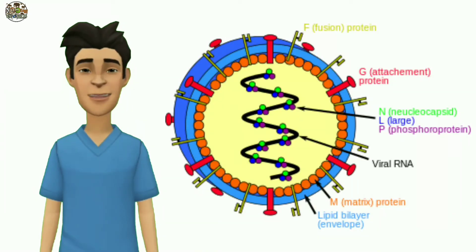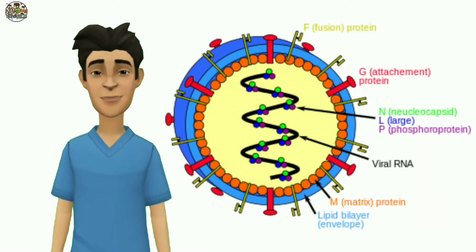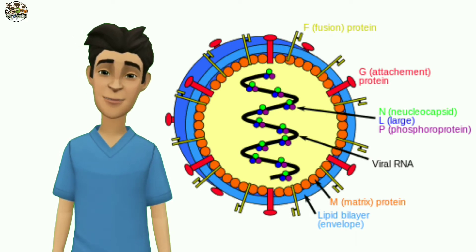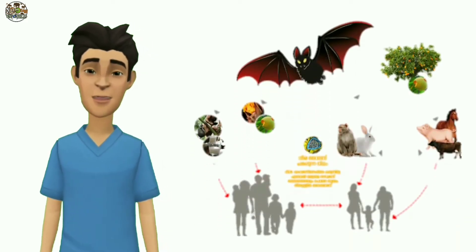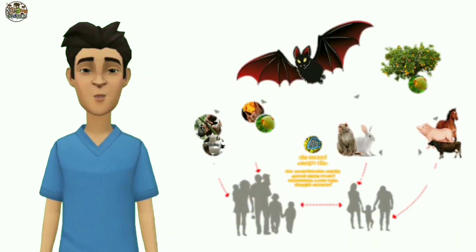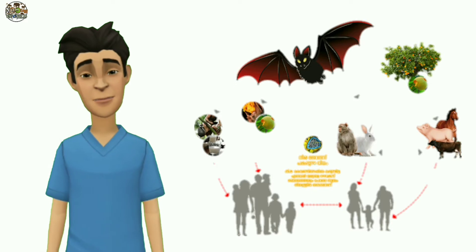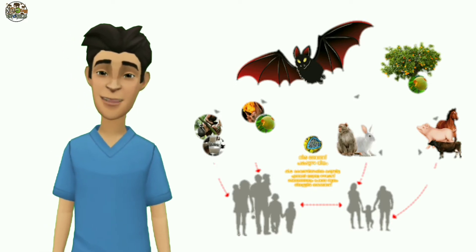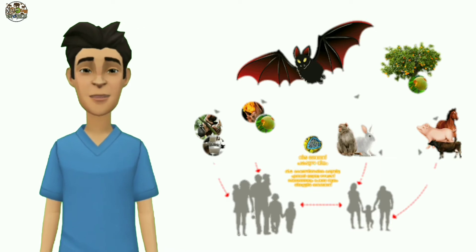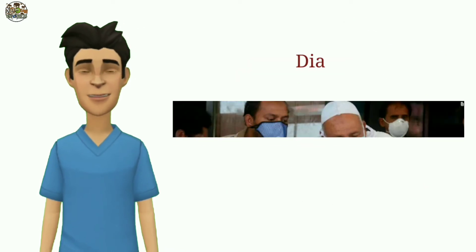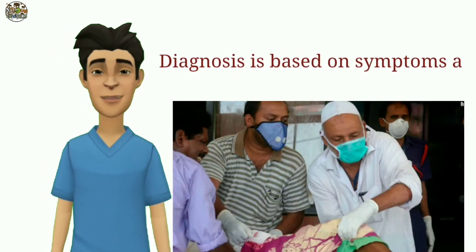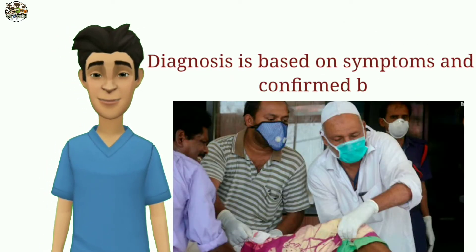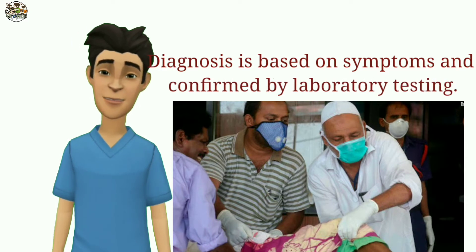The Nipah virus is a type of RNA virus in the genus Henipavirus. It can both spread between people and from other animals to people. Spread typically requires direct contact with an infected source. The virus normally circulates among specific types of fruit bats. Diagnosis is based on symptoms and confirmed by laboratory testing.